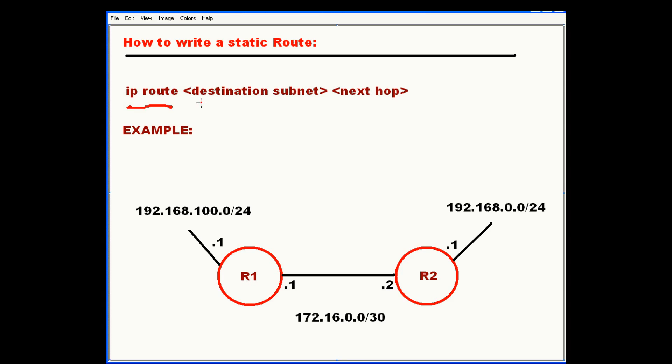Then this next portion is the destination subnet that you're trying to reach. An example would be 192.168.0.0. And then you identify the netmask, 255.255.255.0.